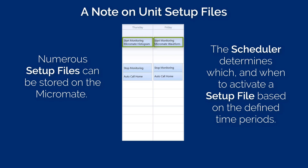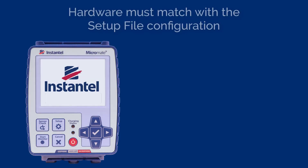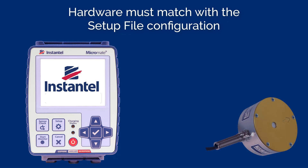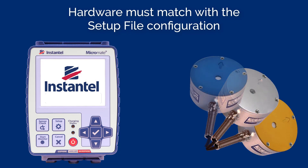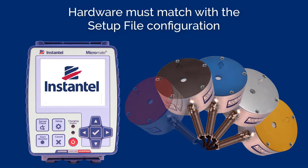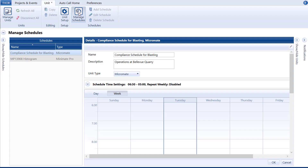The only restriction for operating in this way is that the hardware must match with the setup configuration. You cannot program a setup file to run an ISEE geophone and then change to monitor a DIN geophone. Now let's return to our scheduler and create our schedule.